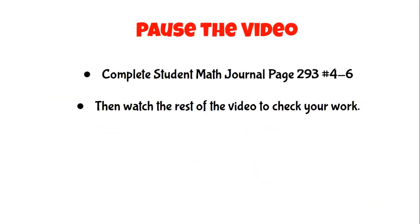Pause the video and complete Student Math Journal page 293, numbers 4 through 6 — the last three problems on the page. Try them on your own. Remember, you need to figure out how to get that variable alone on one side by using the inverse of the operation that's there. Then watch the rest of the video and check these three problems.